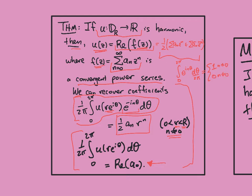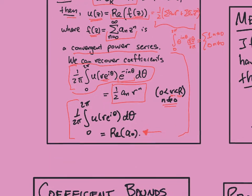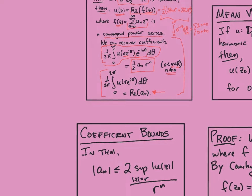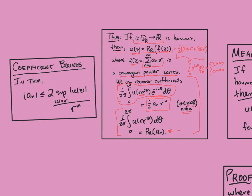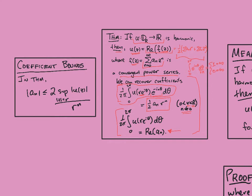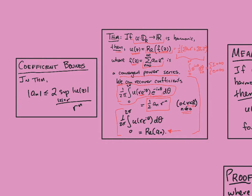Out of this we can get coefficient estimates analogous to Cauchy estimates, so coefficient bounds. I can bound these coefficients here in terms of the supremum of u on the circle of radius r divided by r^n, and then there's this factor of 2 in here. This factor just really depends on how you write u as the real part of a holomorphic function. And you could also, just as we did with Cauchy estimates, take an infimum in here to get an even better bound.